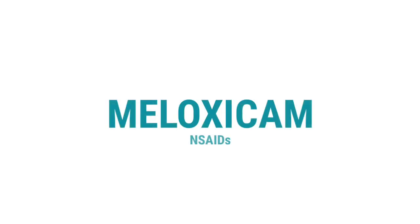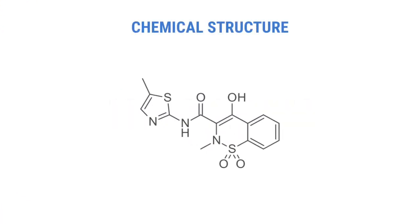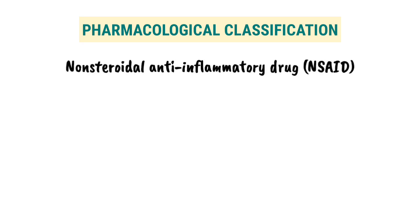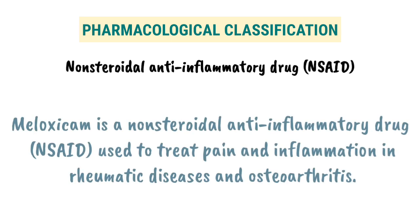Meloxicam. Chemical Structure. Pharmacological Classification: Non-steroidal anti-inflammatory drug. Meloxicam is a non-steroidal anti-inflammatory drug used to treat pain and inflammation in rheumatic diseases and osteoarthritis.